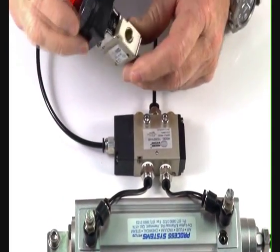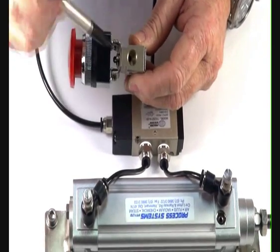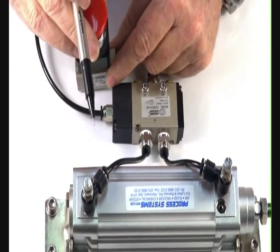Inlet port, outlet port and the exhaust port comes out through the stem of the valve. It's 3-2 normally closed.